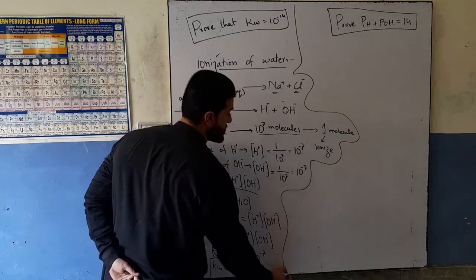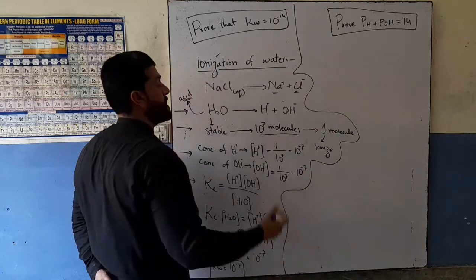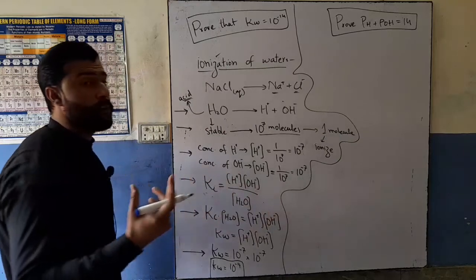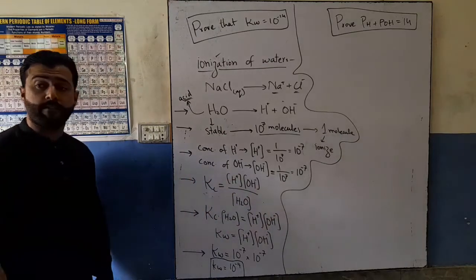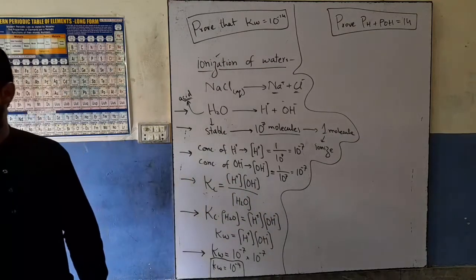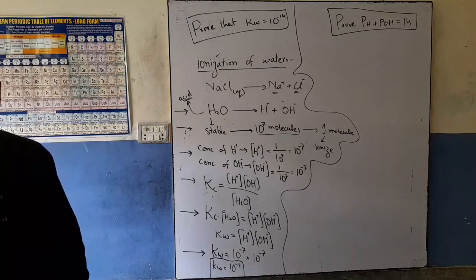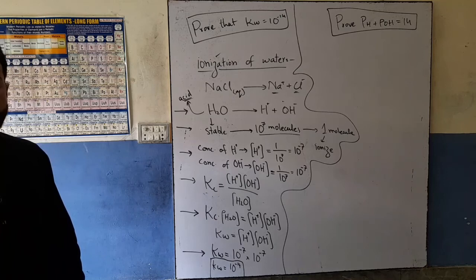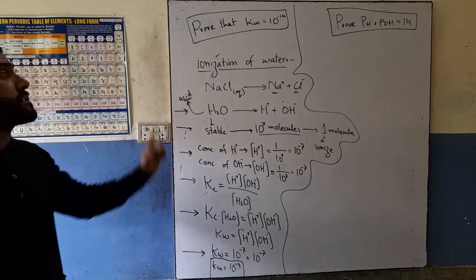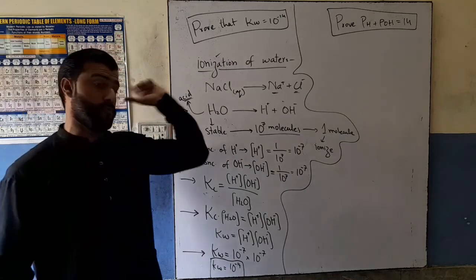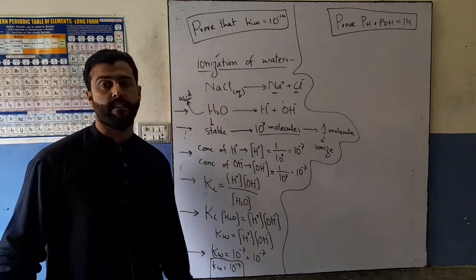If we add acid, in the 10 to the power of 7 molecules we will add hydrogen ions, which changes the concentration. This completes our proof. These steps form the full proof that Kw equals 10 to the minus 14.